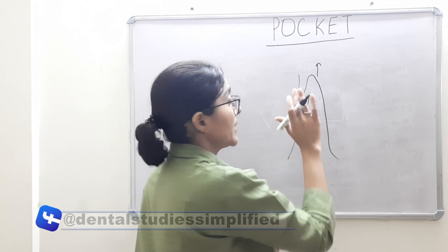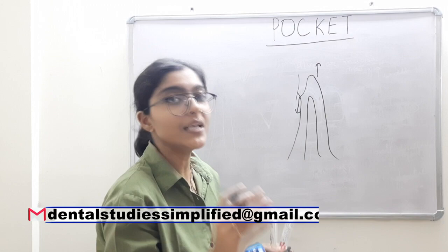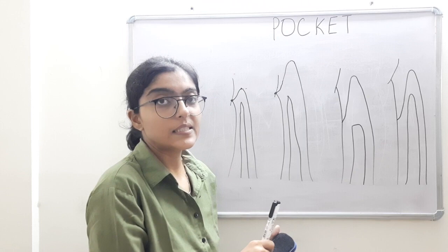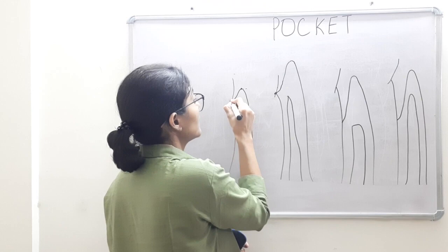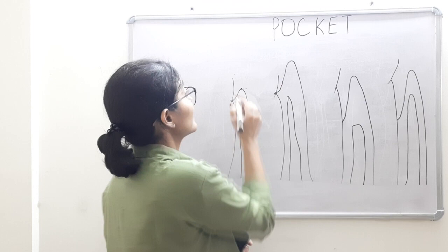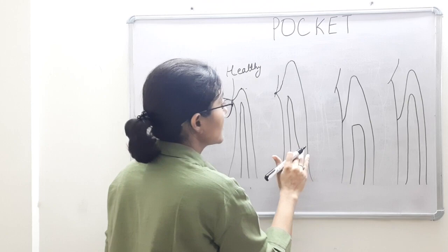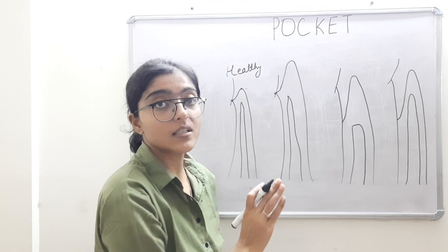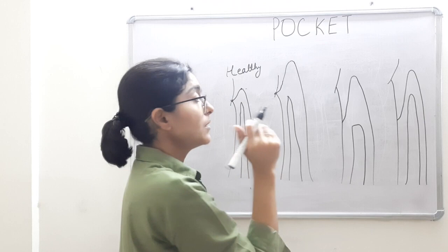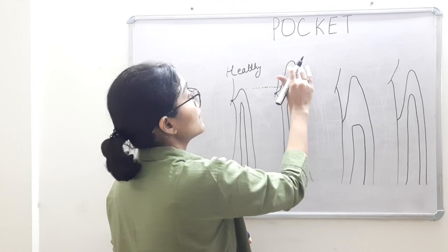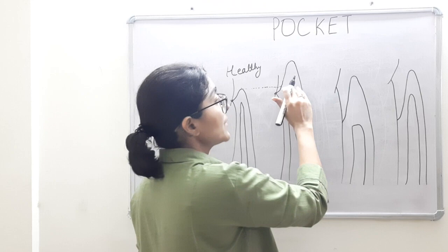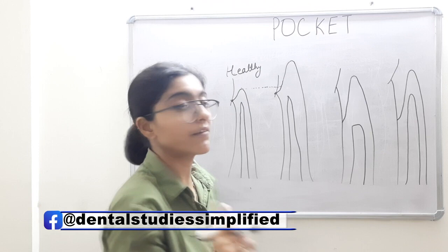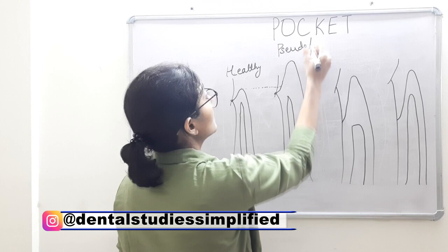We will discuss the classification wherein this concept will be clarified. In this diagram, the base of the sulcus is at or coronal to CEJ — that means this is a healthy sulcus. In the next diagram, the base of the sulcus is still at or coronal to CEJ, but there is still deepening of the sulcus due to coronal migration of the free gingival margin. This pocket is called a pseudo pocket or gingival pocket.